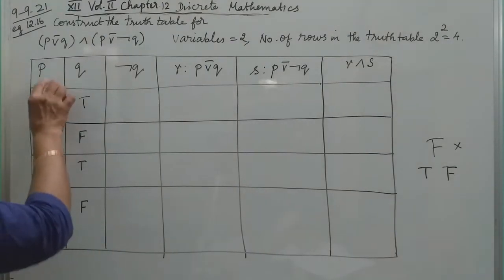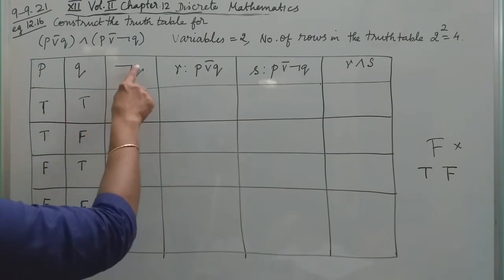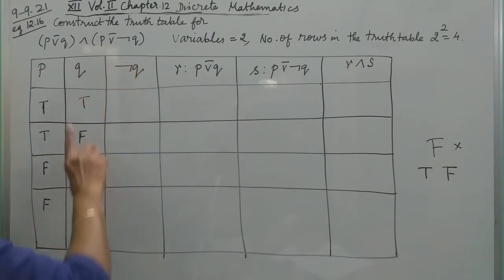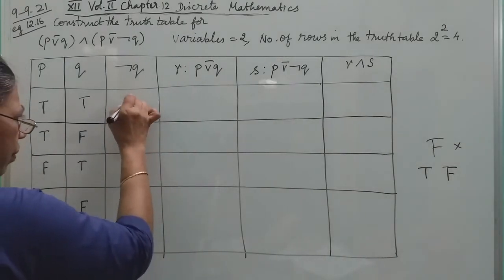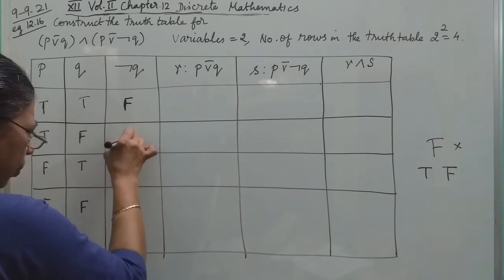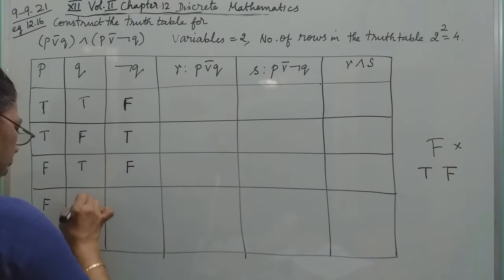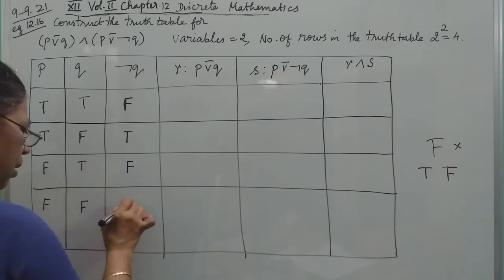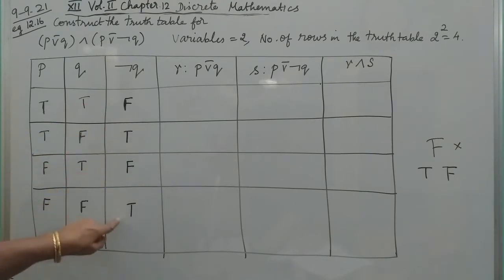Now, if we look at the Q column — the Q column follows the pattern: True, False, True, False. If false is given, this is false. This is false.